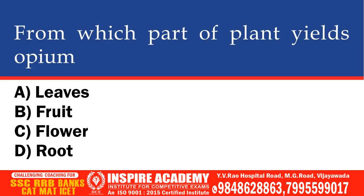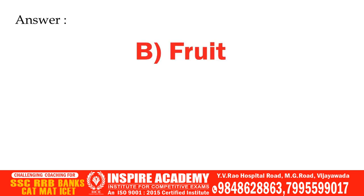From which part of plant is opium yielded? Options: Leaves, Fruit, Flower, Root. The correct option is Fruit.